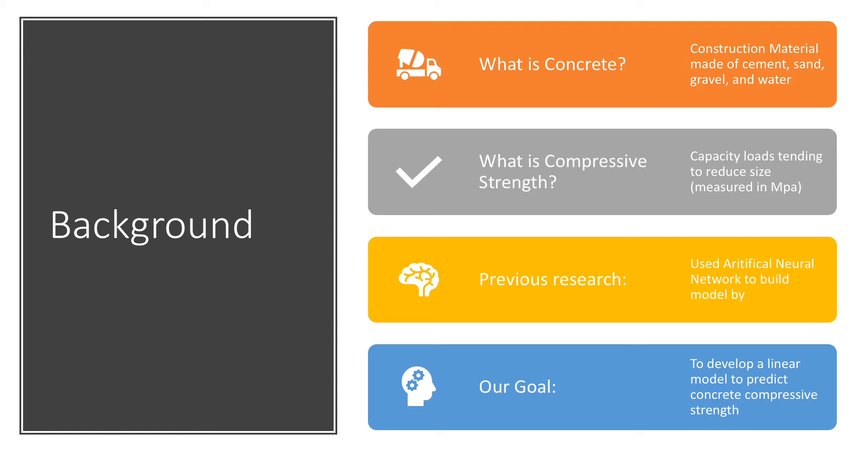Concrete is a structural material consisting of hard, chemically inert particulate substance known as aggregate, usually made of sand and gravel, that is bonded together by cement and water. Compressive strength refers to concrete's capacity to withstand loads that will decrease the size of the concrete.